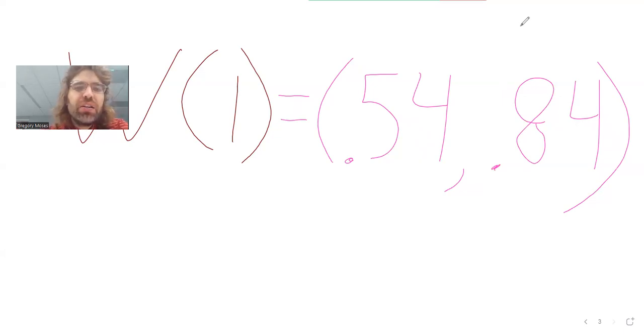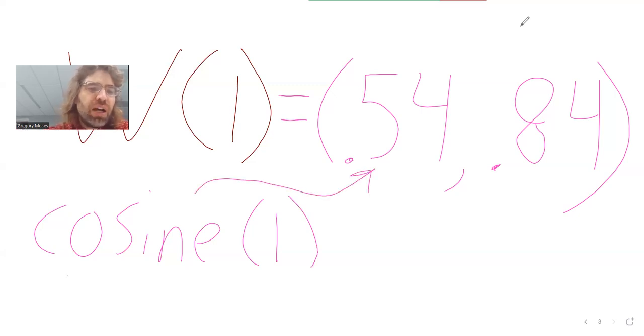And the cosine and the sine are just taking this wrapping function and breaking it into two. So we've got this function that sends one to these two numbers. The x-coordinate is called the cosine and the y-coordinate is called the sine. And what I wrote, cosine one, sine one, that's not the standard way to write this. These are abbreviated as cos and sin.